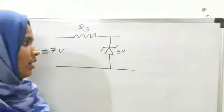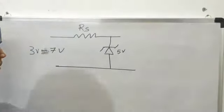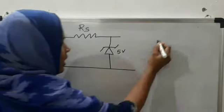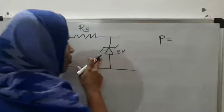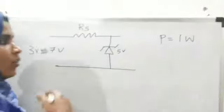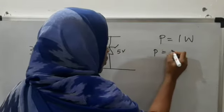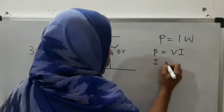After breakdown, the voltage remains constant at 5V. So, the power rating of diode is given as 1 Watt. And, we can calculate the current flowing through Zener diode by the relation P equals VI and I equals P by V.